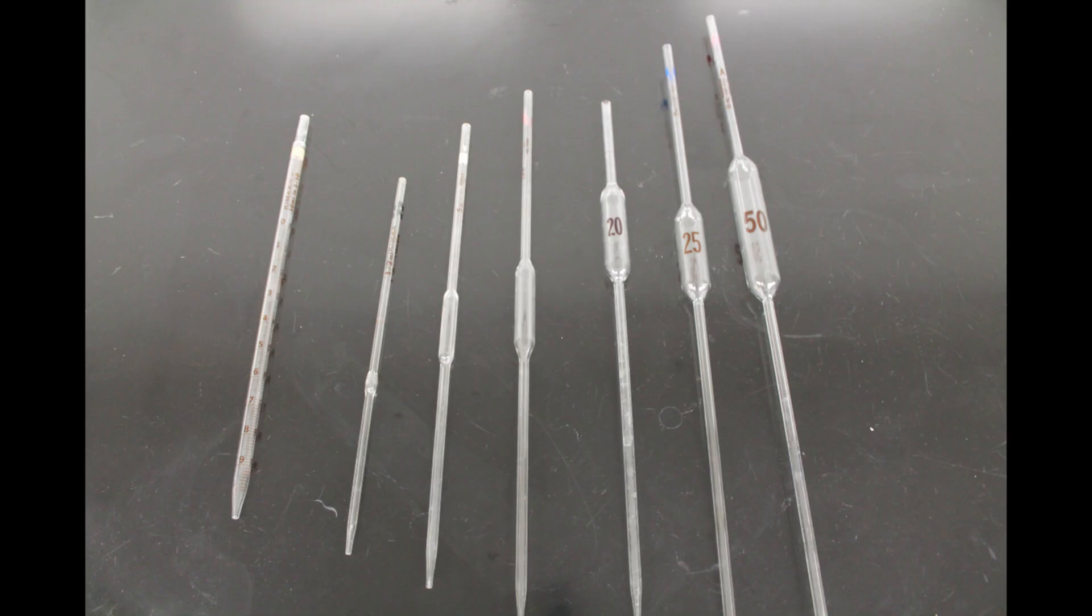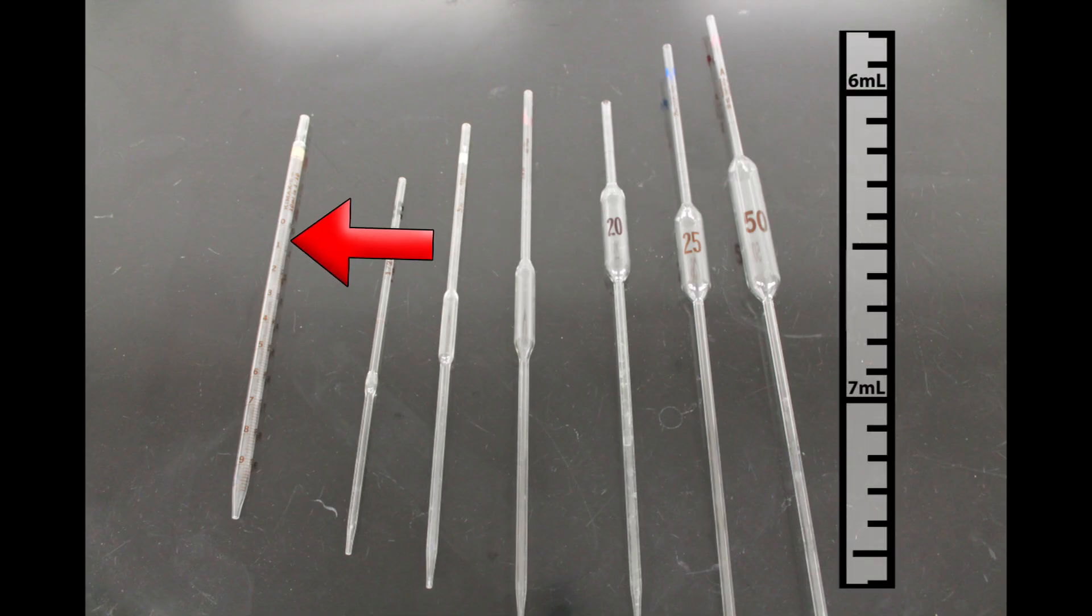Pipettes come in a wide variety of sizes. Here we have everything from a 1mm transfer pipette up to a 50mm transfer pipette. We also have a 10ml graduated pipette with marks for every tenth of a mil similar to a graduated cylinder or a burette.